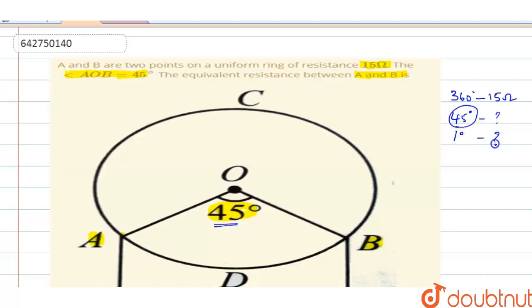Let's keep this as 15/360. Now for 45 degrees, you multiply by 45. So for one degree it's 15/360, and for 45 degrees you multiply that by 45. The resistance for that is 1.875 ohms.